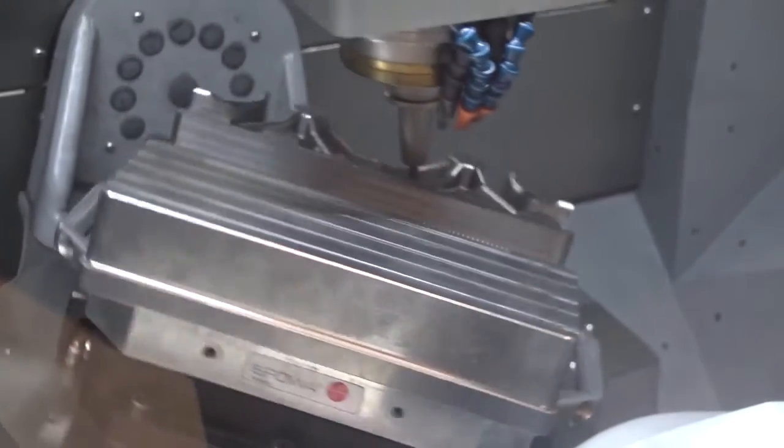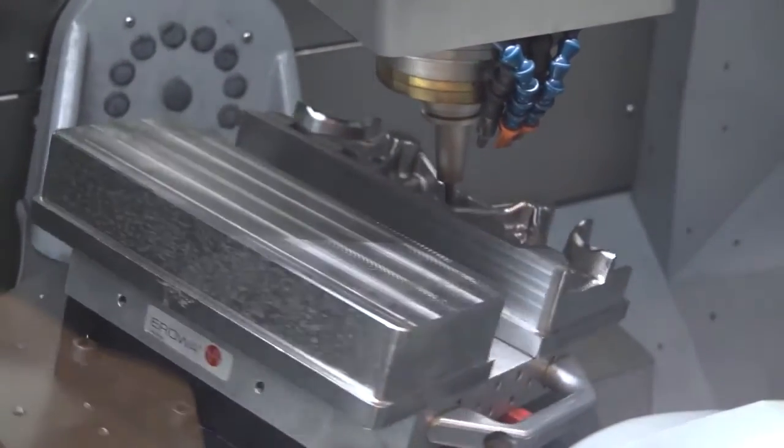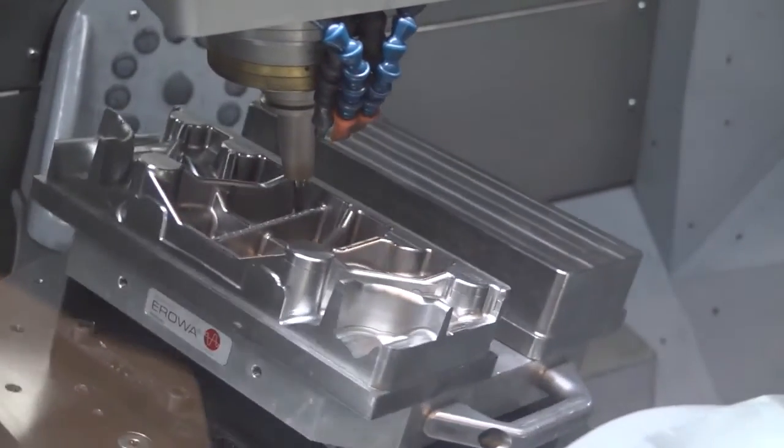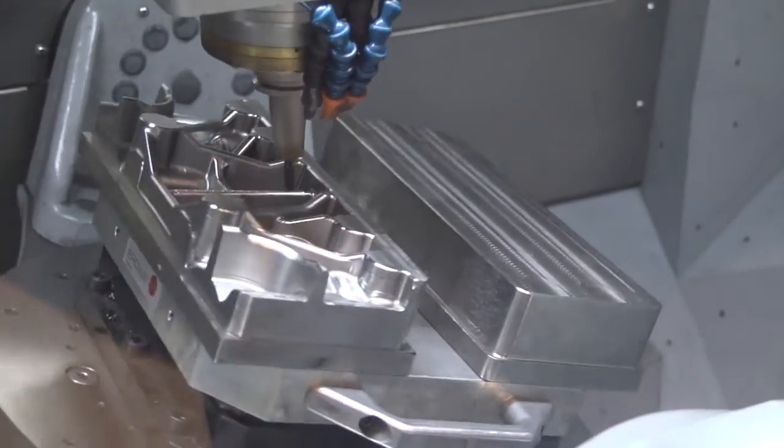But how do we guarantee that part when it comes off is what the machine says? One of the options on the machine is what we call Delcam Power Inspect. We offer it as a standard on all the machine tools.